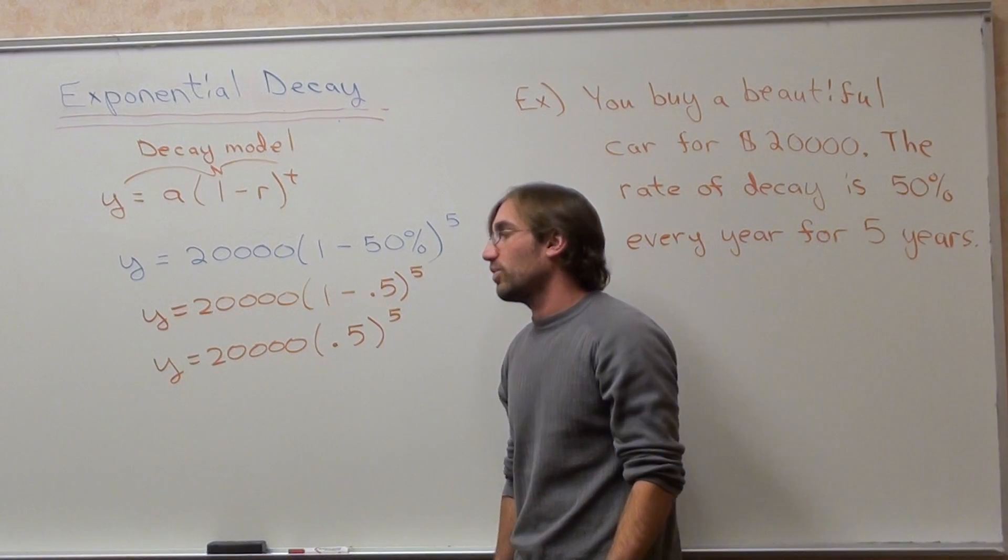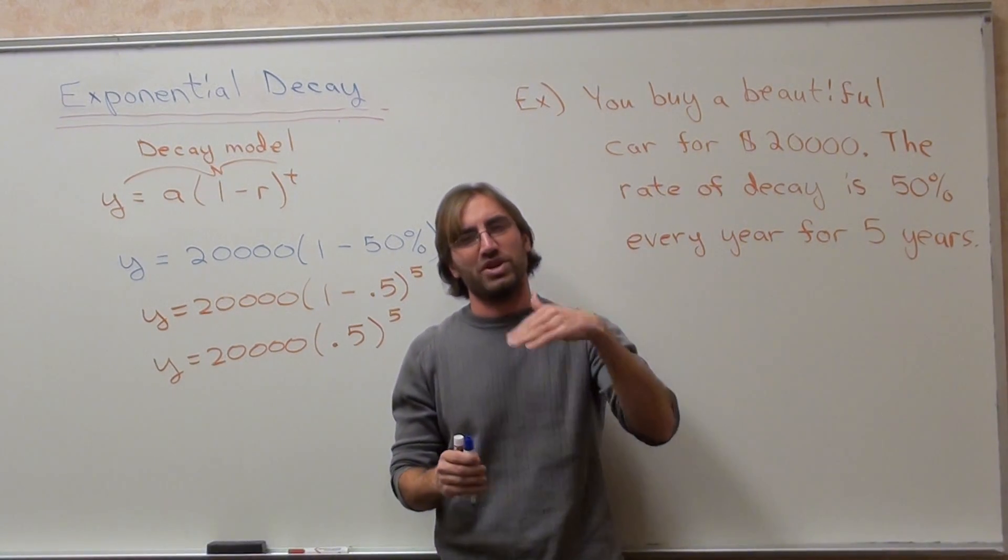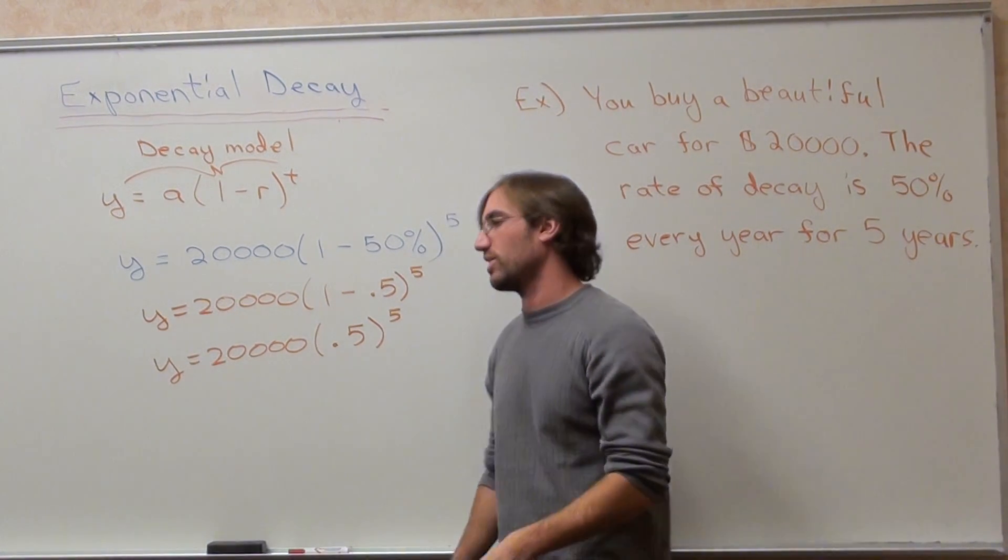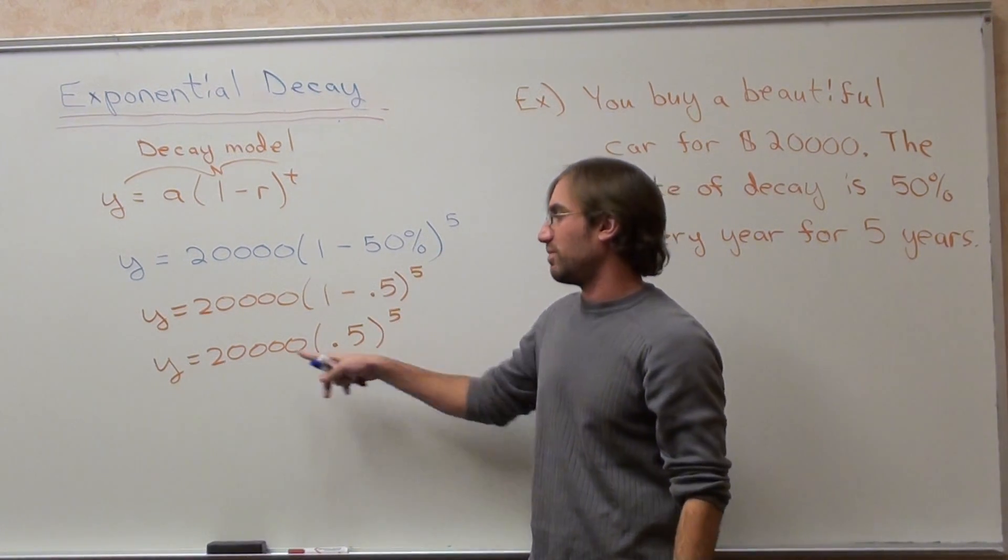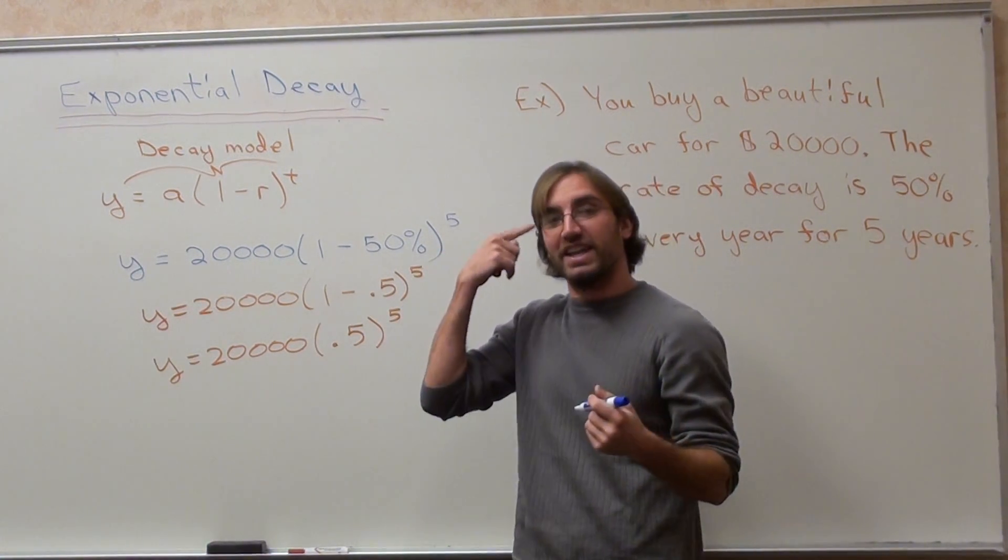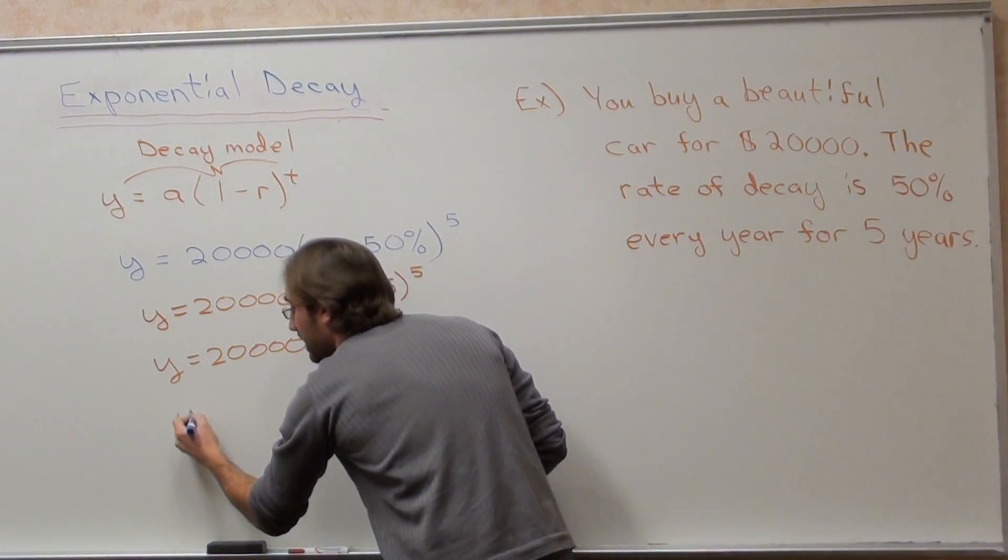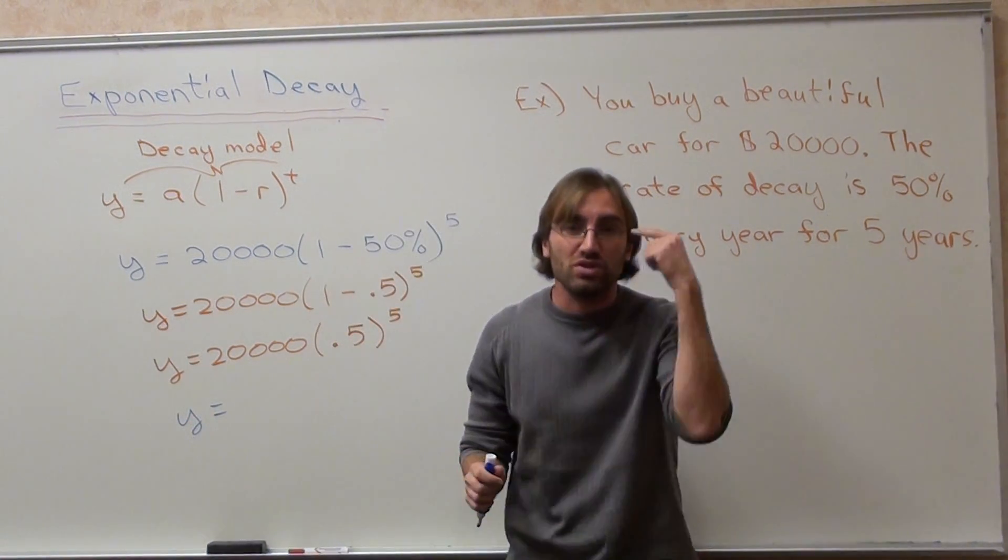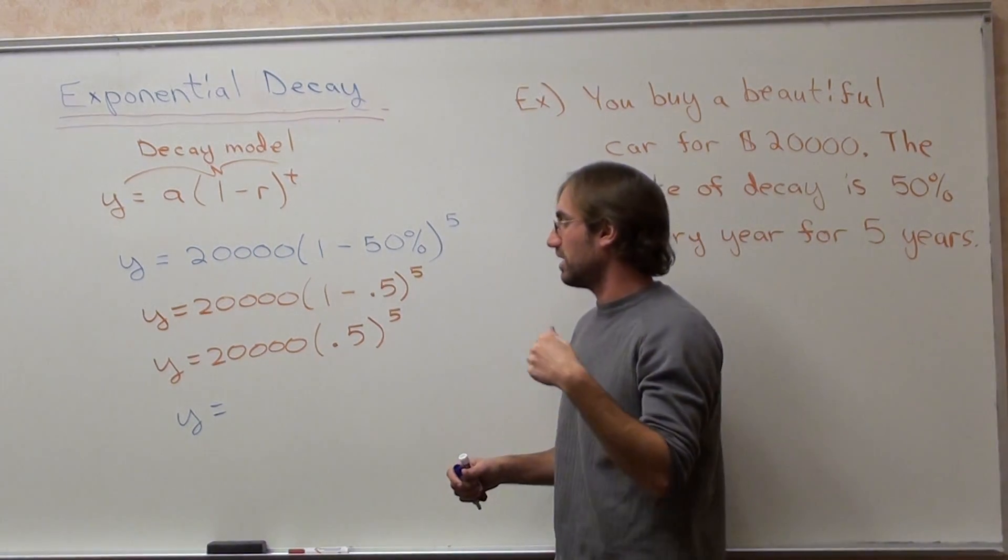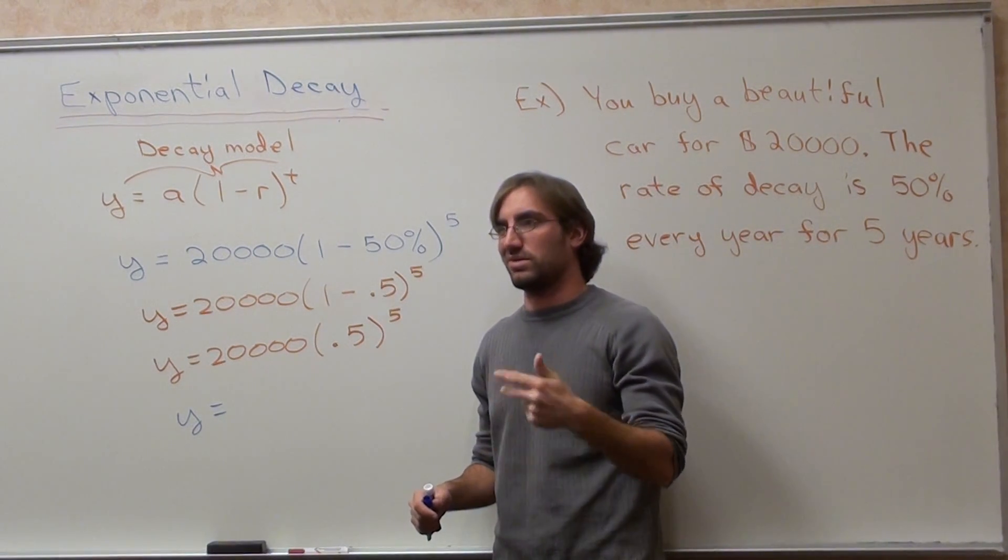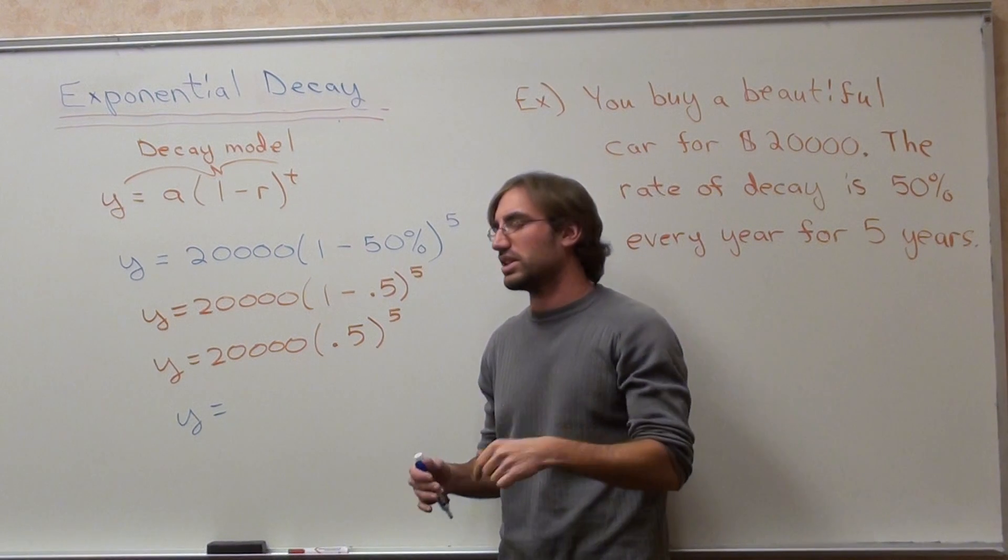But I do know what the answer is, because I know that it's depreciating 50% a year. You probably should do 0.5 to the fifth and then multiply it by 20,000. I can't actually do that. I know the answer because I can do it in my head. I can do 50% of 20,000 for five years. So it comes out to 10,000, 5,000, 2,500, 1,250, 625.